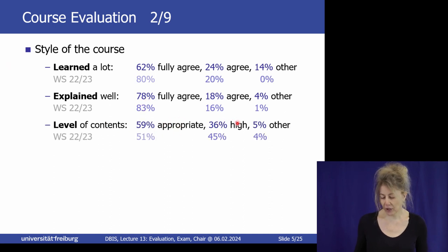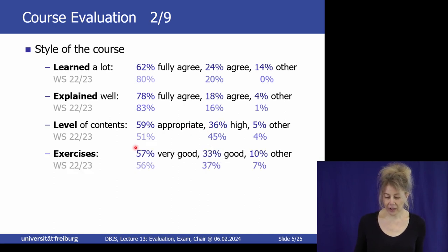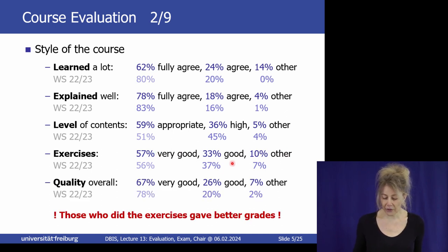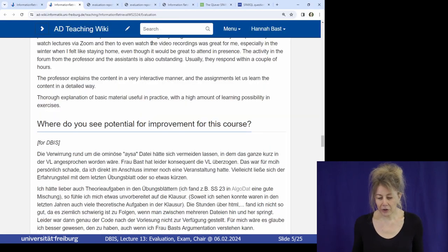Exercises: 57% found them very good. Quality overall: 67%, which is much less than last year; 26% good. This year we had a new question for a reason: 'Did you participate in the exercise sheets?' — with options from 'I did all of them' to 'none of them.'